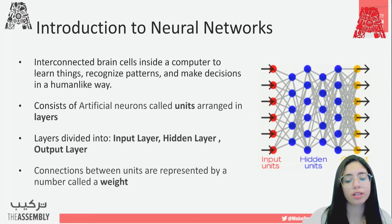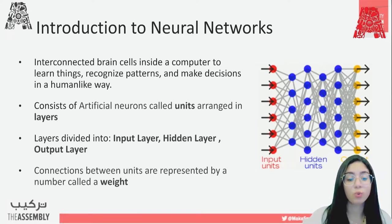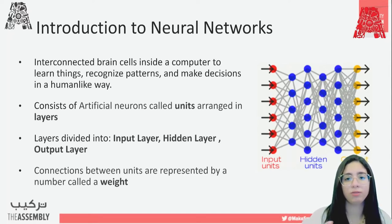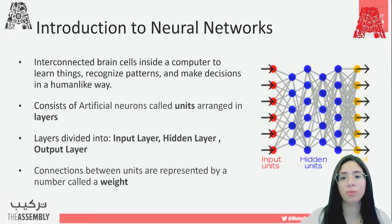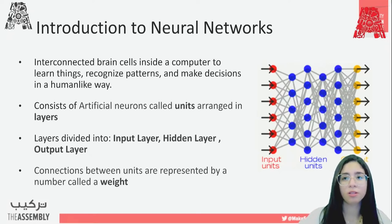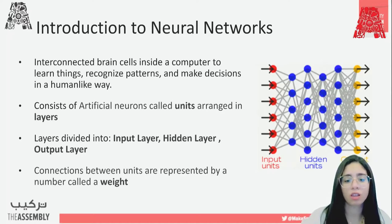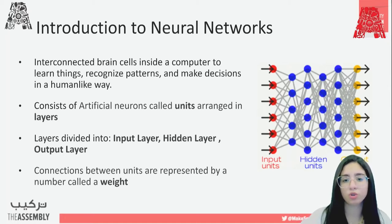The layers are divided into three classes. We have the input layer — usually just one layer — where data is fed into the model. Then we have the hidden layers, where all the processing, calculation, and prediction happens. There can be many hidden layers, and the more hidden layers, the better the accuracy, but the more processing the model requires. Then we have the output layer, which is just one layer showing the final prediction.